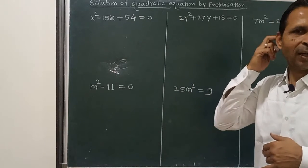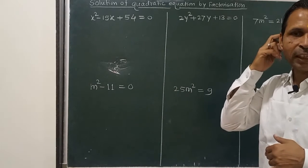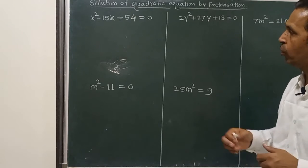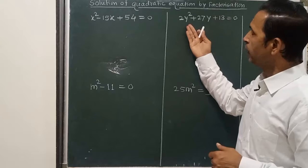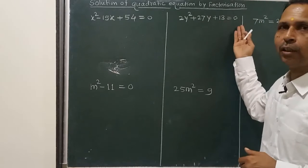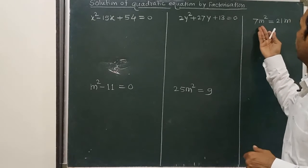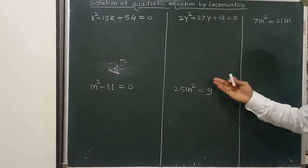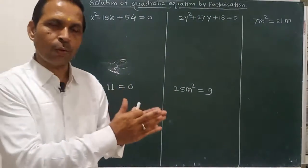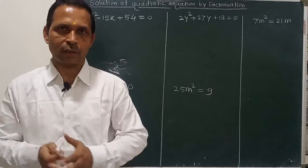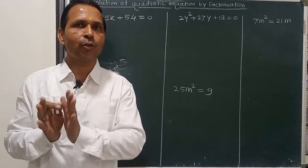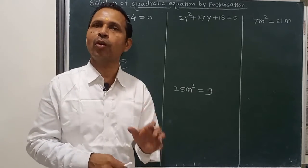Here are three terms: x squared minus 15x plus 54 is equal to 0. Here are also three terms: 2y squared plus 27y plus 13 is equal to 0. Here are only two terms in the other examples. We have the square term, the middle term, and the constant. This is the standard form of the quadratic equation: x squared plus bx plus c is equal to 0.